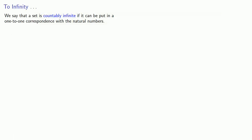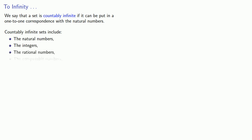We say that a set is countably infinite if it can be put in a one-to-one correspondence with the natural numbers. As we've seen, countably infinite sets include the natural numbers, the integers, the rational numbers, the computable numbers, provable statements, and so on.